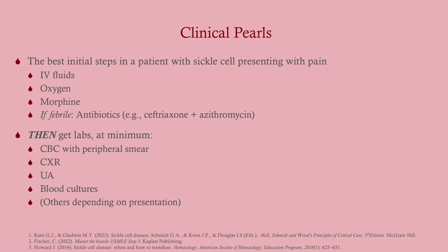Clinical pearls: the best initial step for any sickle cell patient presenting with pain is fluids, oxygen, and pain control. If they have a fever, give antibiotics — ceftriaxone and azithromycin is a good combination, though fluoroquinolones are an alternative. Get labs promptly, but ensure blood cultures are drawn before administering antibiotics — that's a general rule of thumb. At minimum, obtain a CBC, chest X-ray, urinalysis, and blood cultures, with additional workup based on presentation.